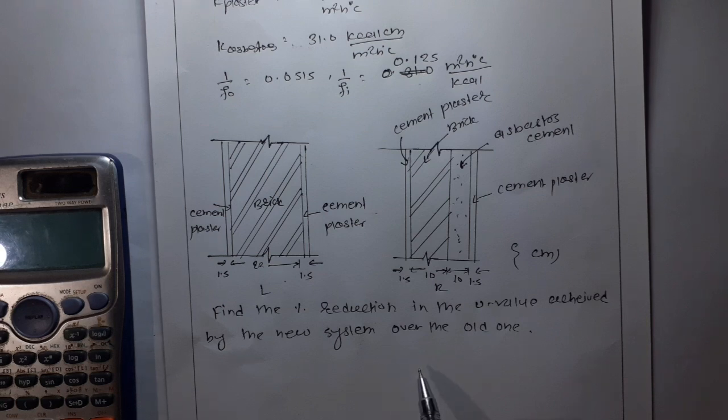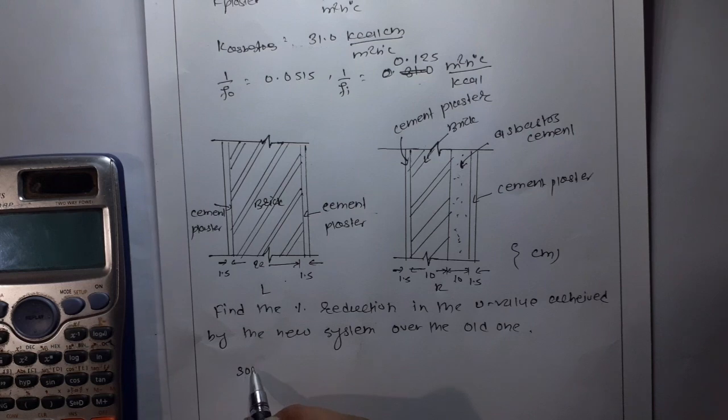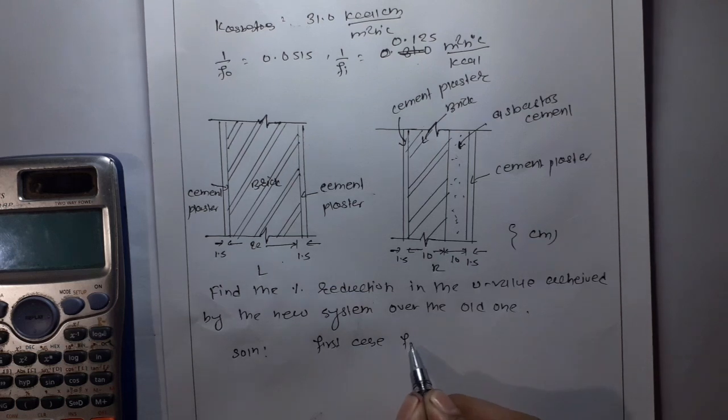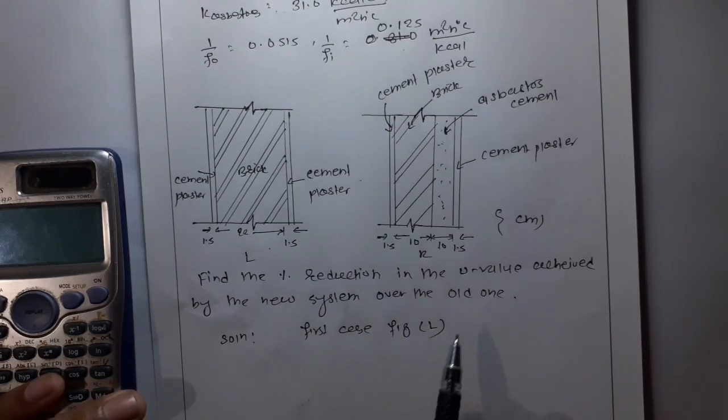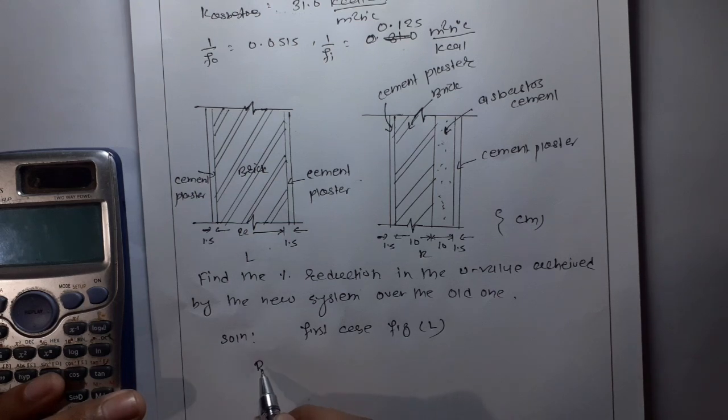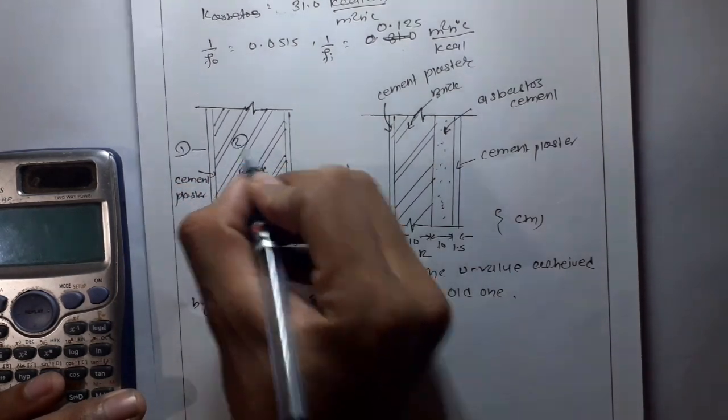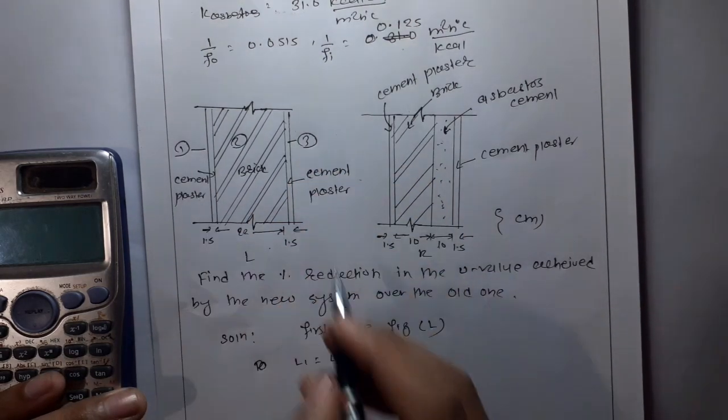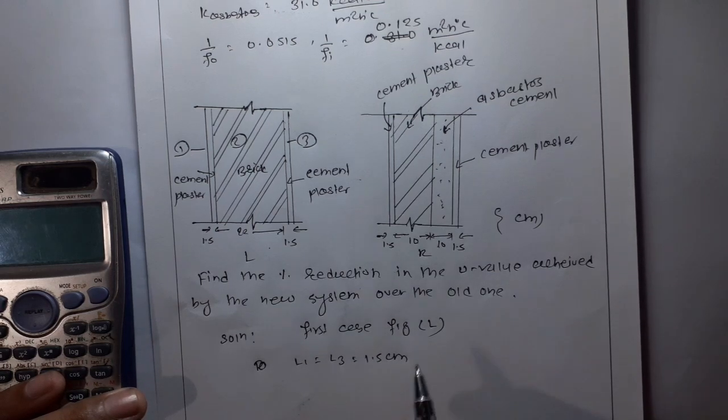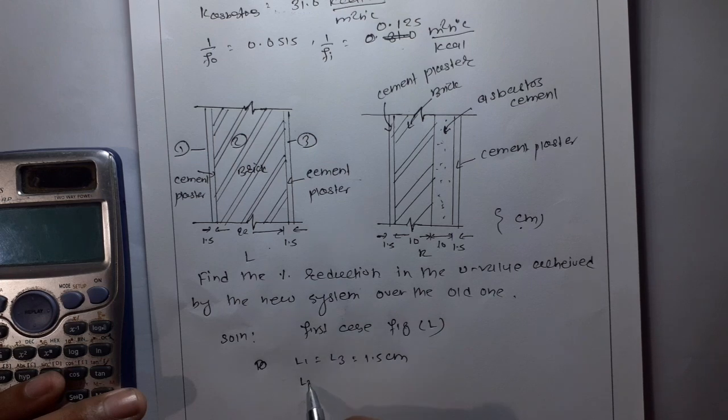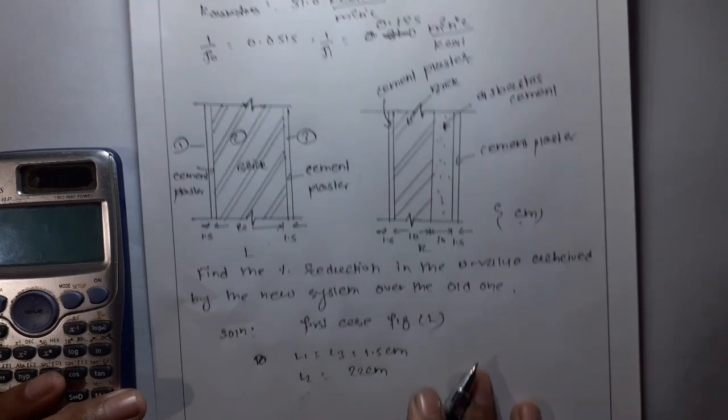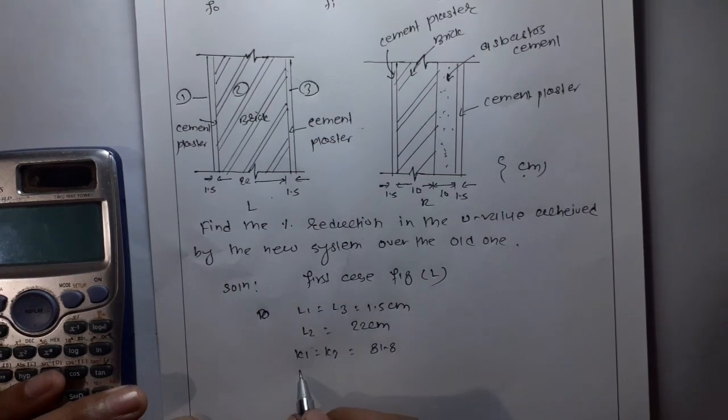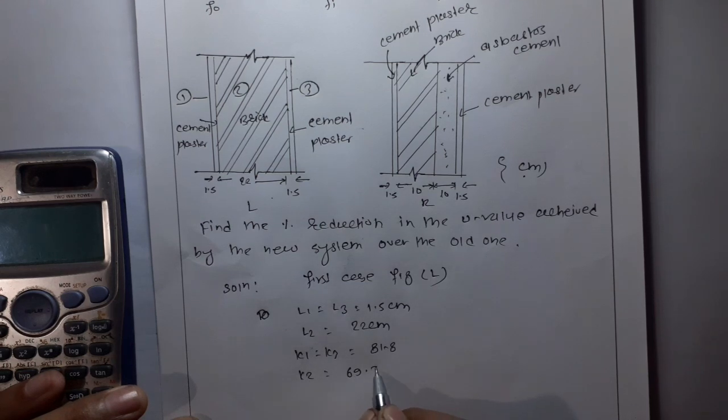So for the old system: L1 is 1.5 cm, L2 is 22 cm. K1 is equal to K3 is 81.8 and K2 is 69.7.